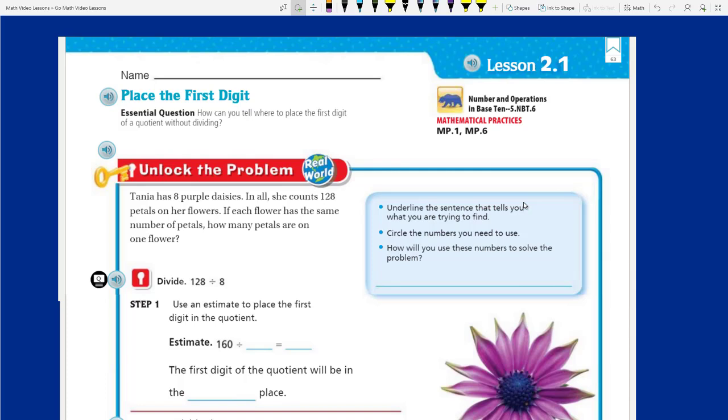We have our topic today, which is Place the First Digit. I like it. Something to do with division, maybe? I hope so. It says essential question. This is our learning target. This is our focus. It says, how can you tell where to place the first digit of a quotient without dividing? Whoa! Is that like, did that go over your head? Whoa, watch out, Frisbee! Yes, I'm telling you, my goodness. We're going to have to really focus on this lesson today. I hope so. This seems like it's going to be really important. But, of course, we can't do any of that unless we unlock the problem.